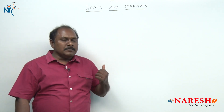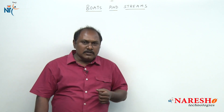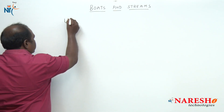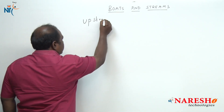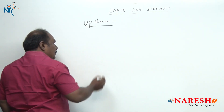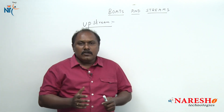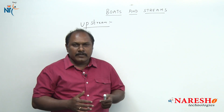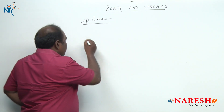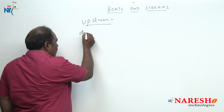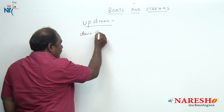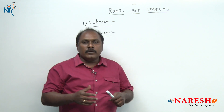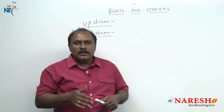What are the terms generally we find in this concept? We generally find two terms. The first one is upstream — traveling opposite to the flow of a stream is upstream. The next term is downstream — traveling along with the flow of the stream is downstream.